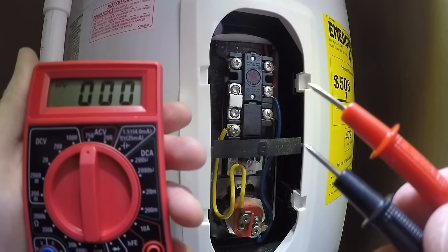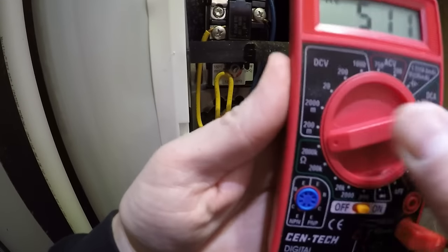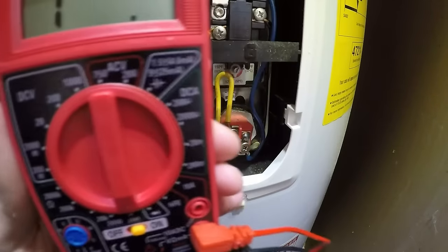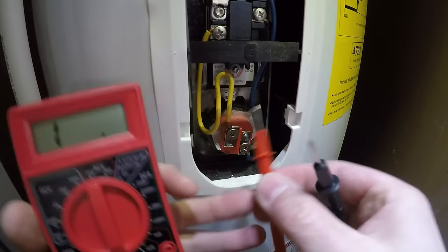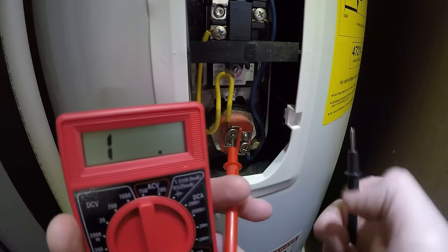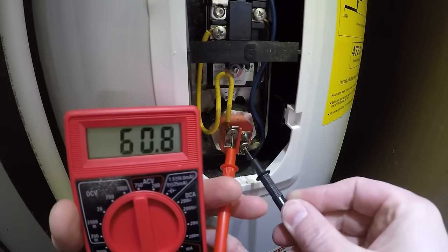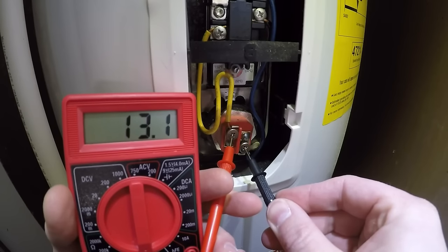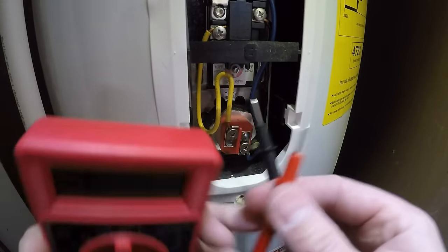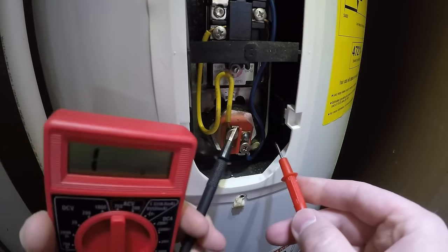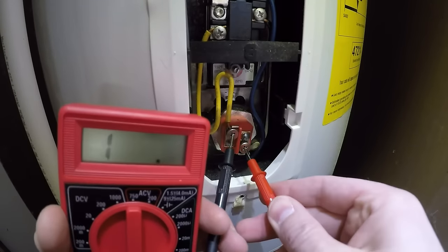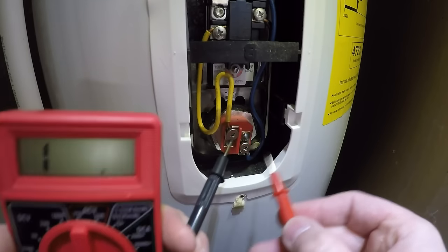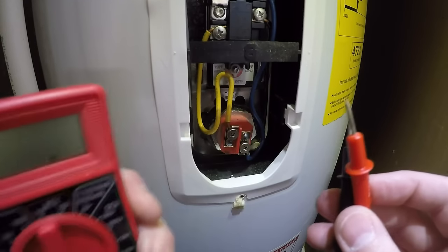Make sure your digital meter is set to the lowest ohm setting. Mine's 200 on this one. All you need to do is touch the probes to the screws on the heating element. You should get something between 10 and 16 ohms. That one there is good. And again, the power is off. It does not matter that the wires are connected here. I'm going to switch it around and just to show you, it really doesn't matter which one you connect here. Now we can check the bottom one since this one's good.